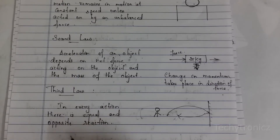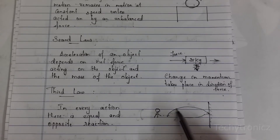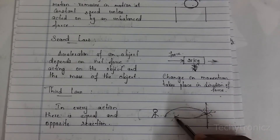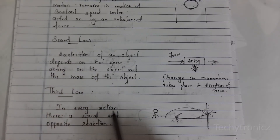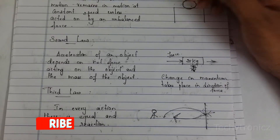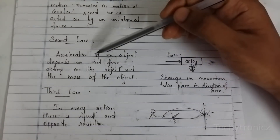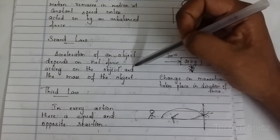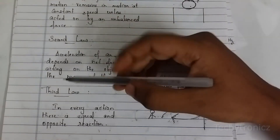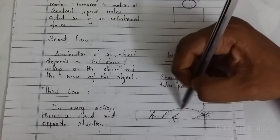Then the third law: in every action there is an equal and opposite reaction. For example, if a person pushes against a wall, the wall pushes back. In every action there is an equal and opposite reaction. These are the three laws of Newton.